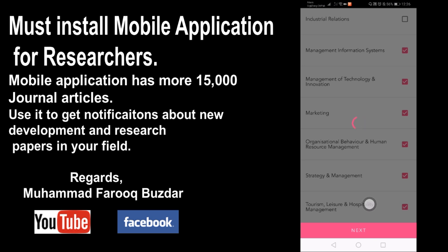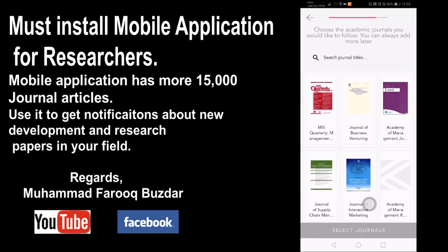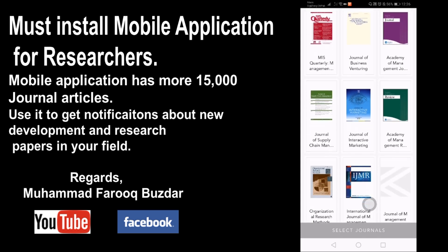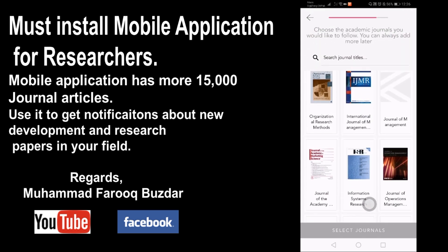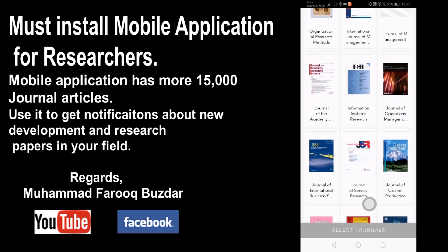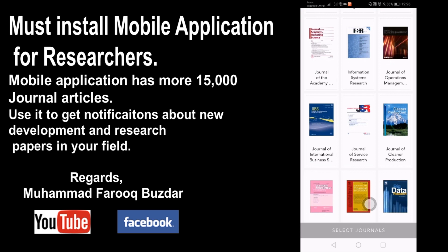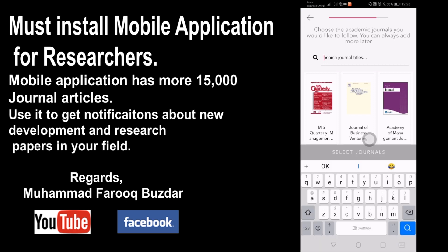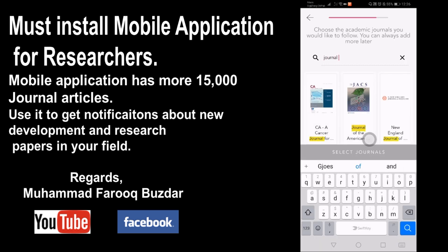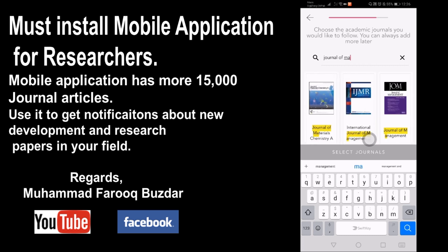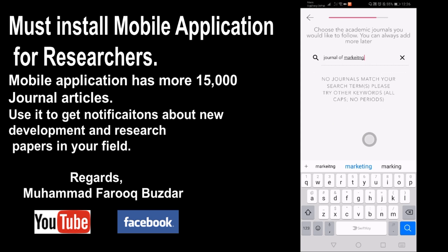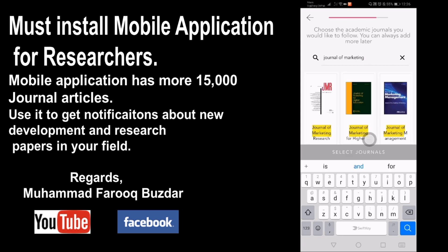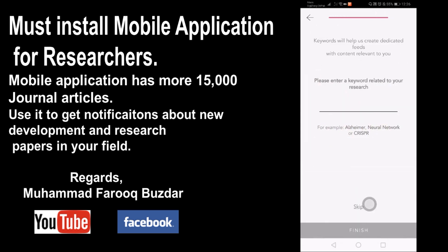Here we go — there is the Academy of Management Journal, Journal of Business Ventures, Journal of Management, Journal of Supply Chain, International Journal of Marketing Management, Journal of Services Research, and others. I want to search for the Journal of Marketing. It shows the Journal of Marketing Research, owned by the American Marketing Association — I will follow this journal.